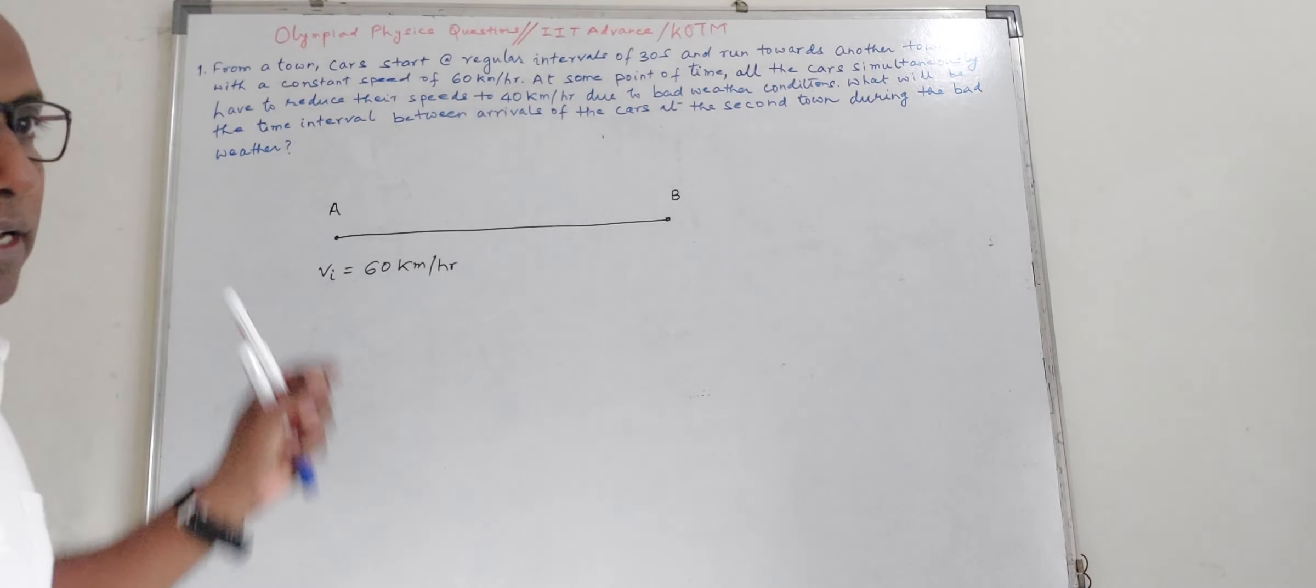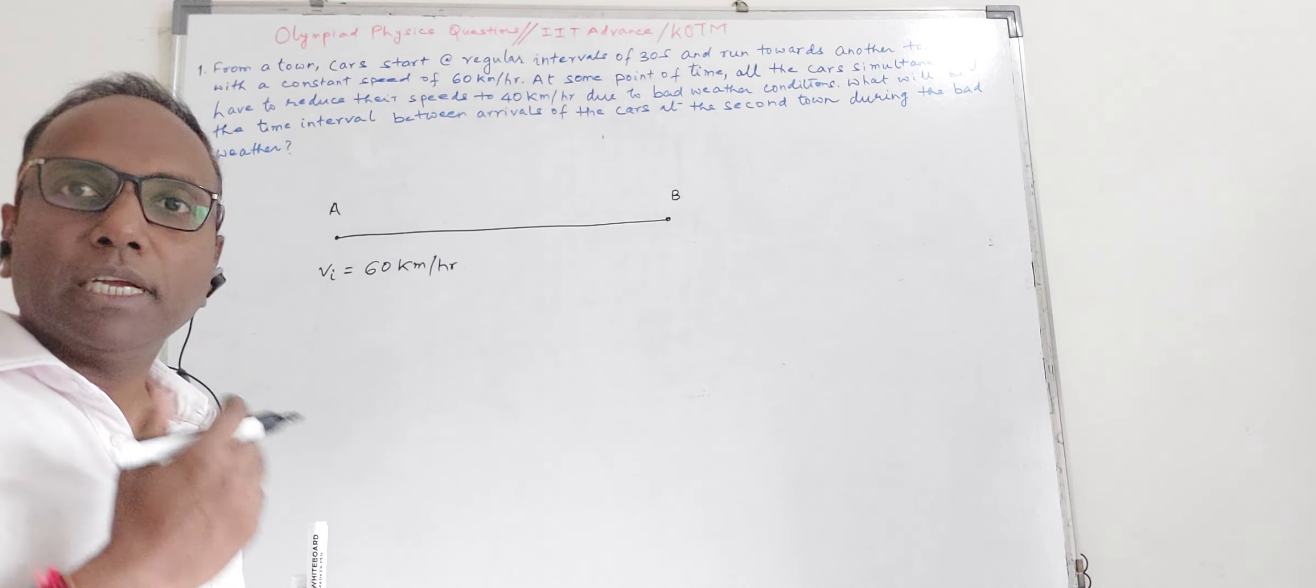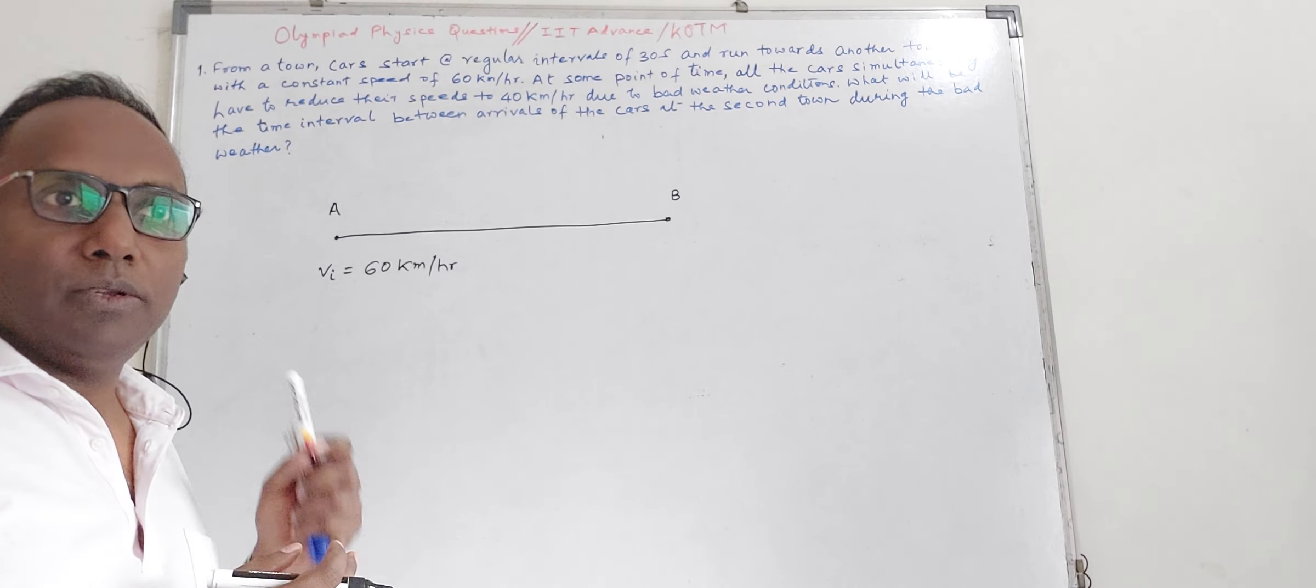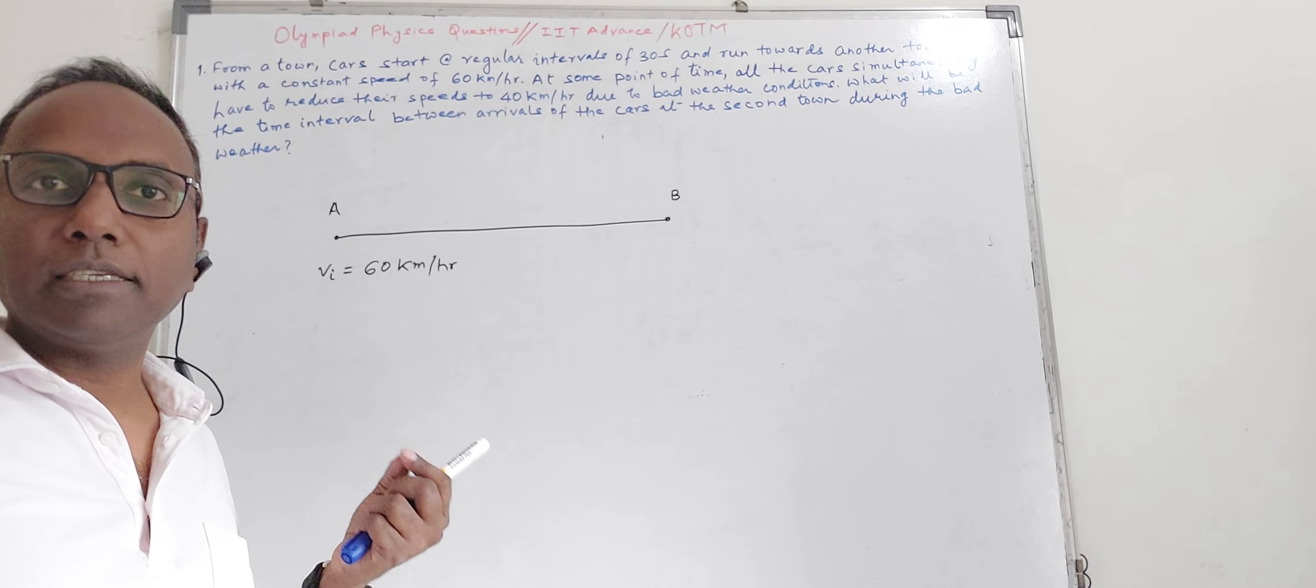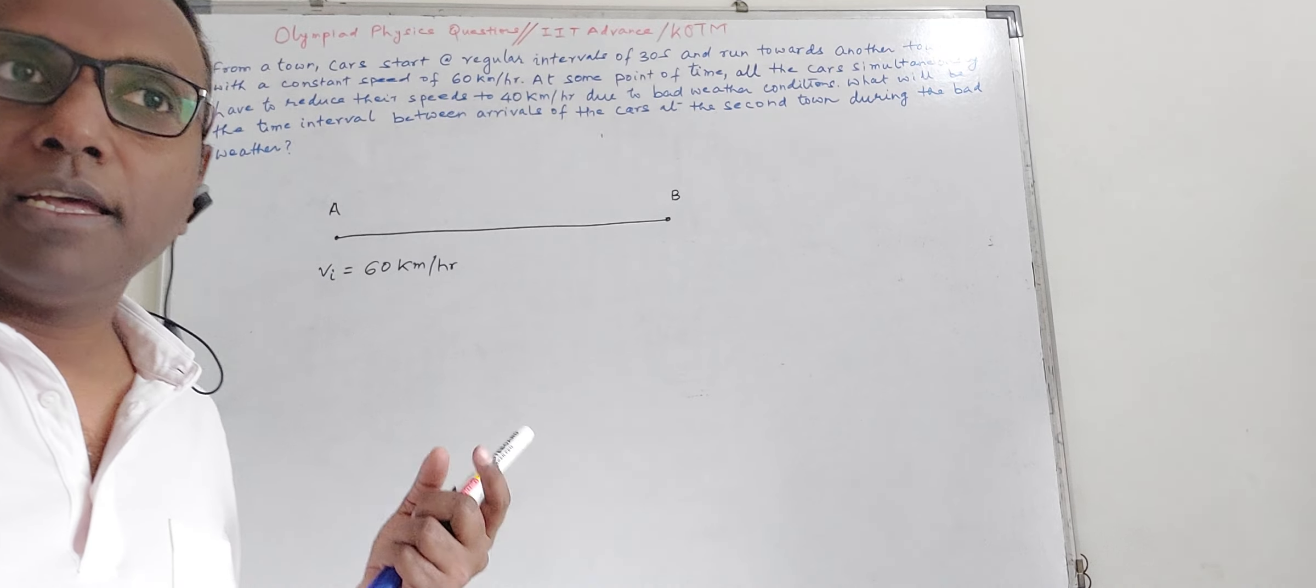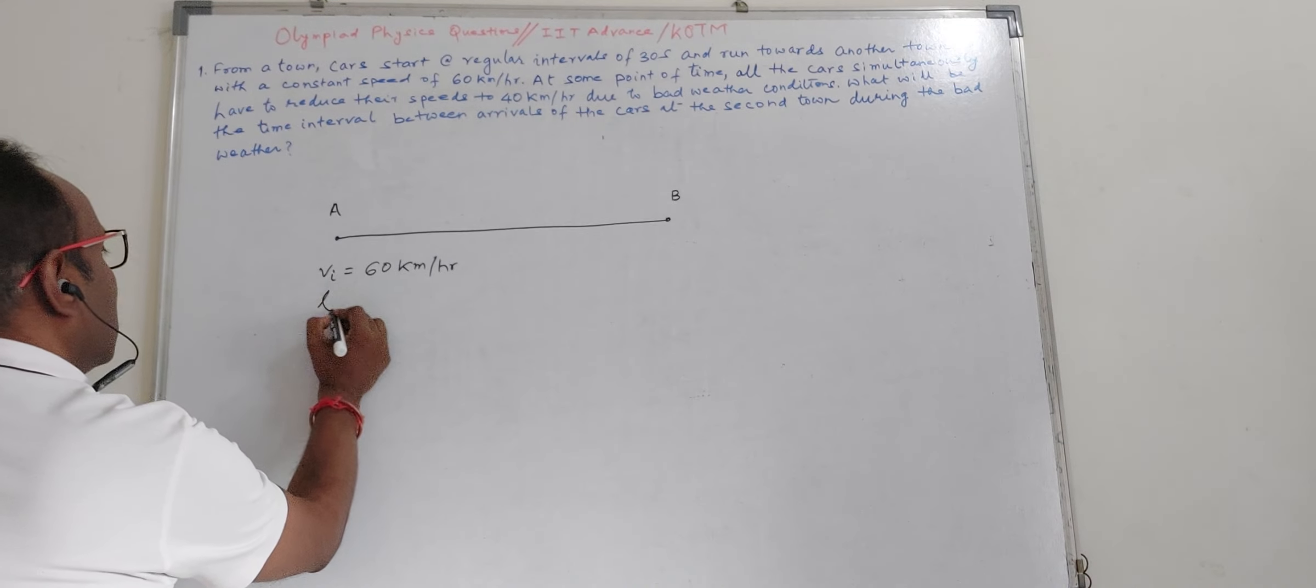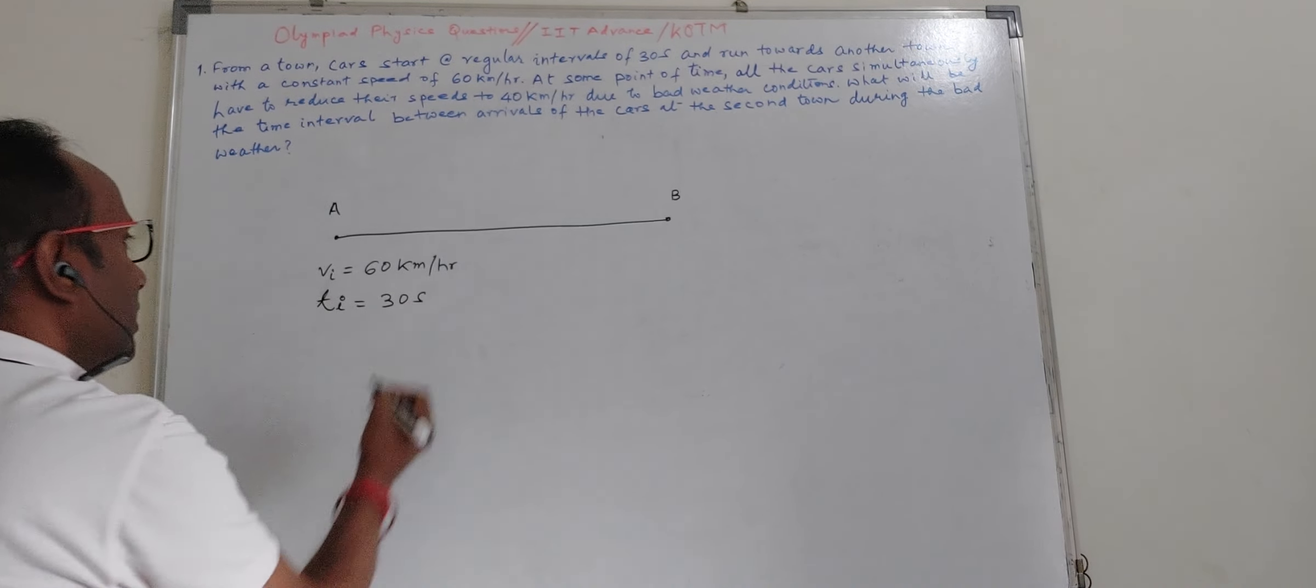And each successive car - car number one starts at t equals zero seconds, car number two starts at t equals 30 seconds, car number three starts at t equals 60 seconds and so on. So the time interval of starting between two successive cars, TI, is equal to 30 seconds as given in the question.